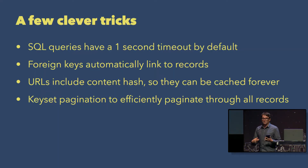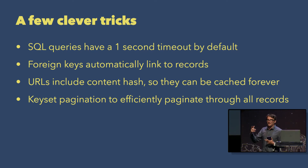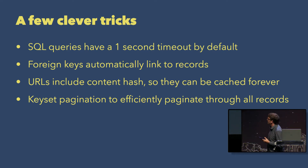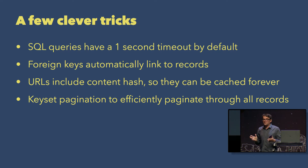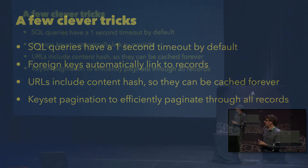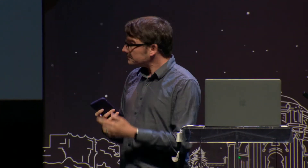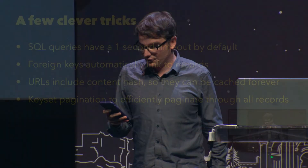There are a bunch of other clever tricks. Datasette gives your SQL queries one second to execute and then terminates them, so nobody can send maliciously expensive SQL queries and lock up your server. It does neat things with foreign keys — the web interface will have hyperlinks between records if it detects a foreign key. The URLs contain a six-digit hash of the database content, which means if the data changes the URL changes, so you can cache things forever. All caching headers are set to far-future, and if you put it behind Cloudflare, a query will only ever be executed once and then cached. There are also efficient tricks with pagination to page through 190,000 trees without difficulty.